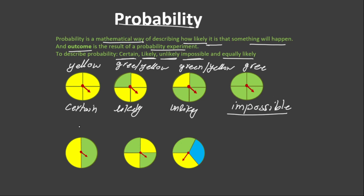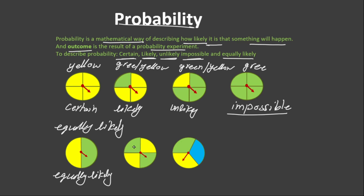When the result of an experiment is equal, or when there is equal chance for something to happen, we use the word equally likely. For example, for the first spinner down here, we have two possible outcomes: yellow and green. Because both of them have equal chance to happen, we use equally likely to describe them. In the second spinner also, there are four possible outcomes, out of which two are yellow and two are green. So both yellow and green have got equal chance to happen, so we use equally likely.